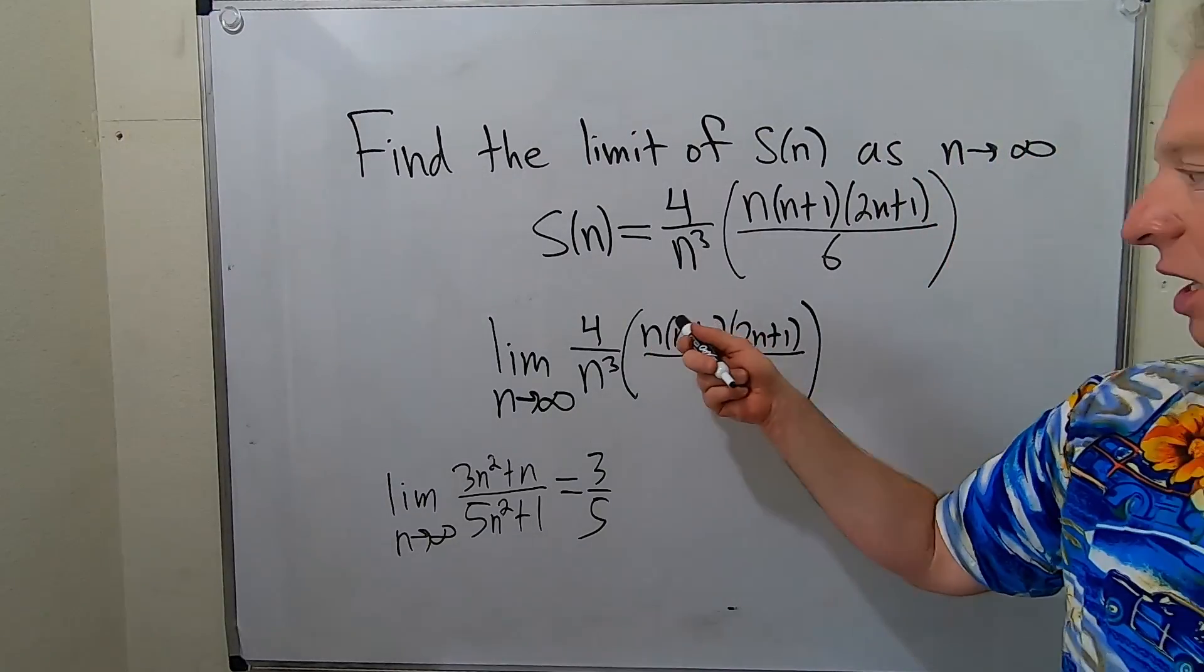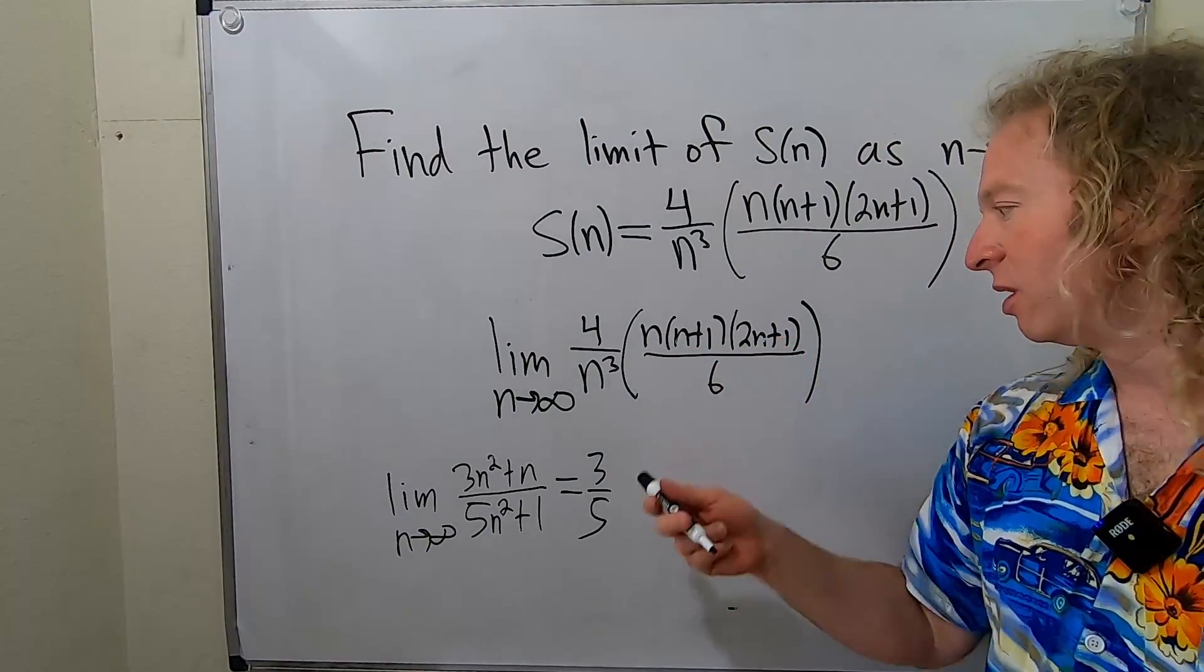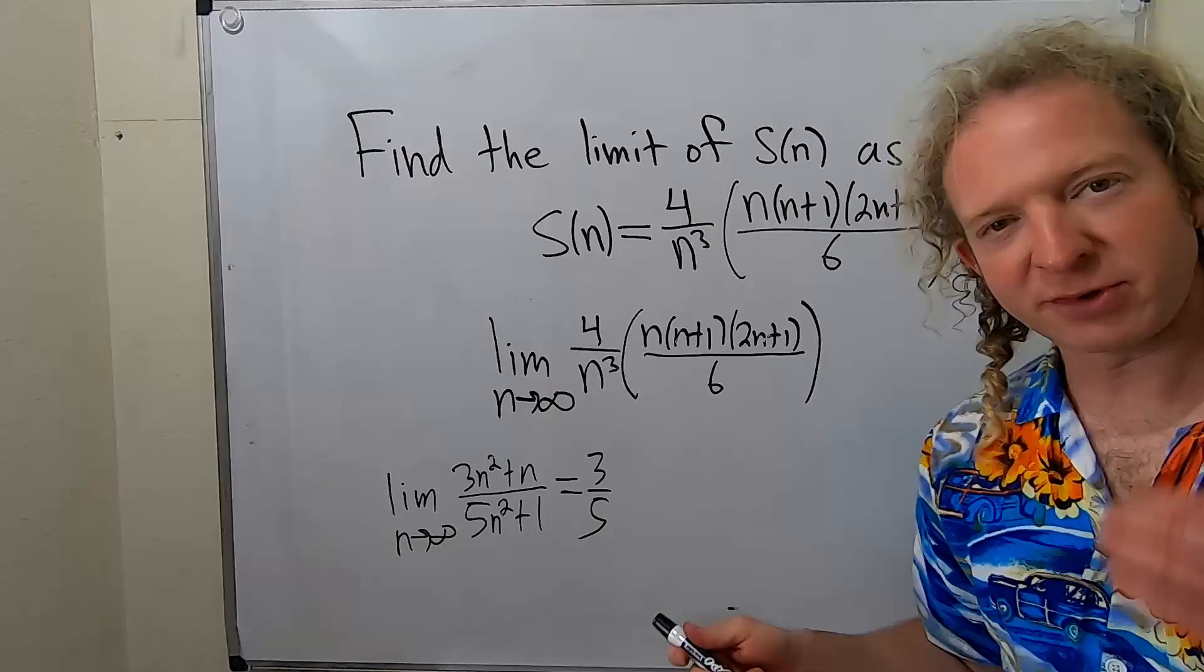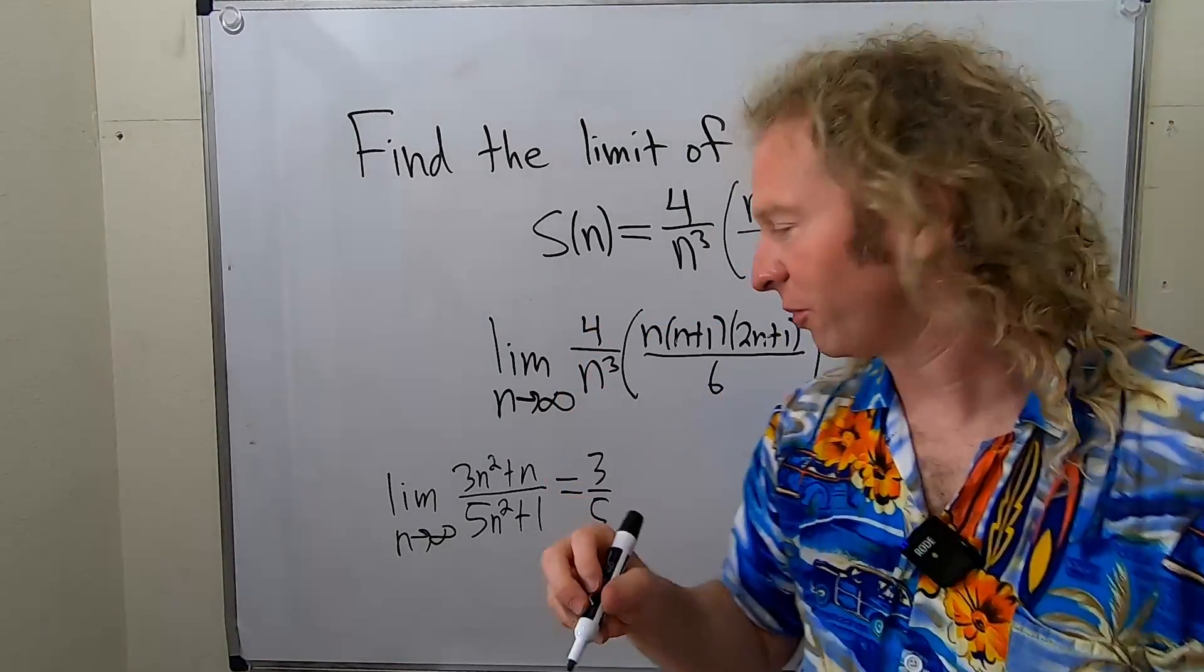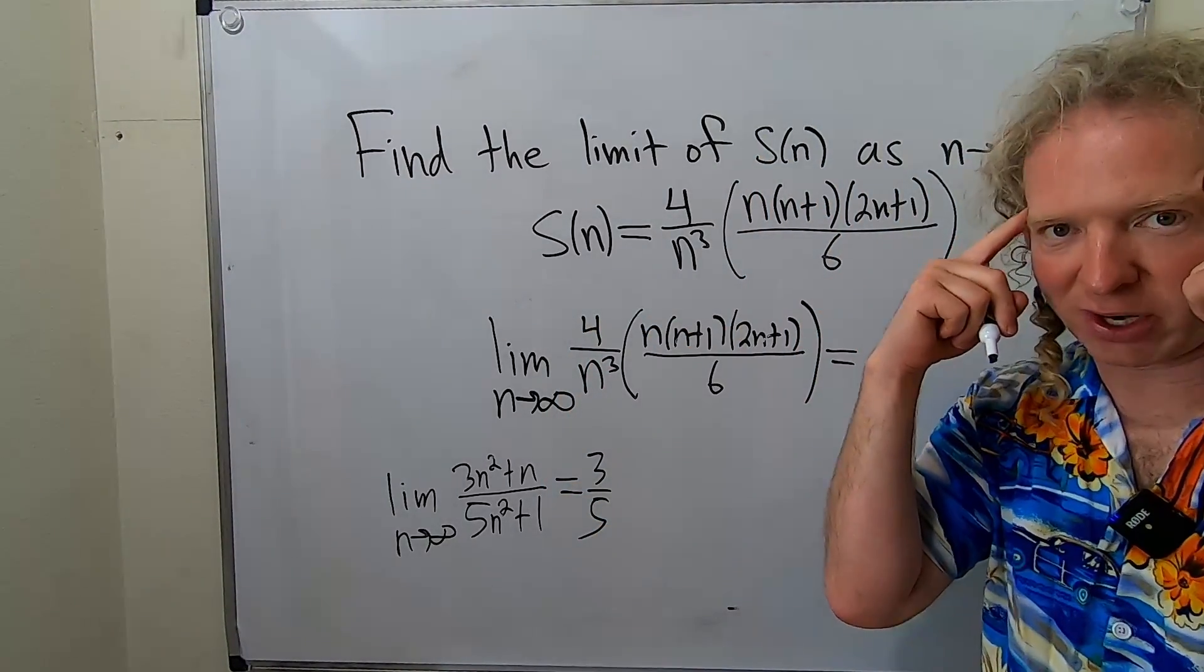So here it's the same thing. Look, n times n times n is n cubed. So it's n cubed over n cubed. So the answer is going to be that ratio. The tricky part is you have to multiply it all out in your head.